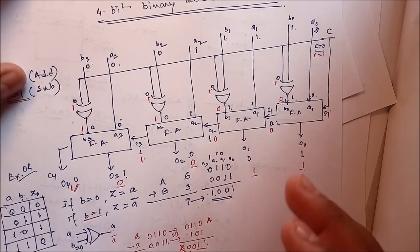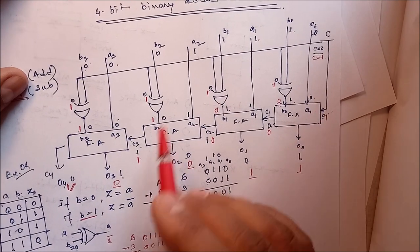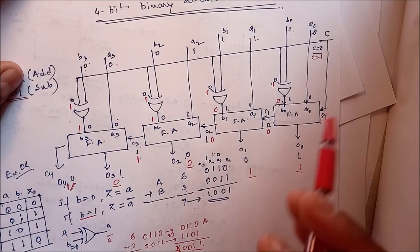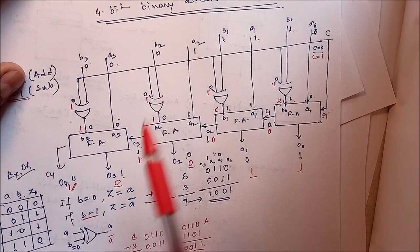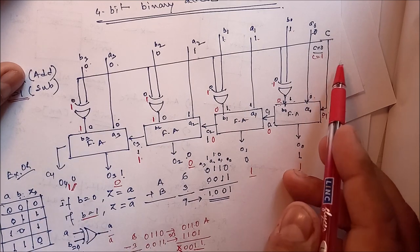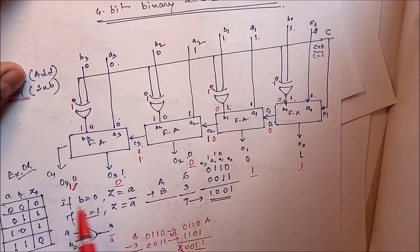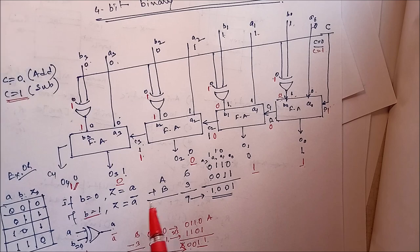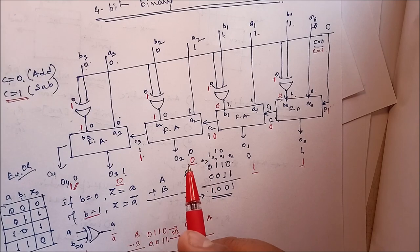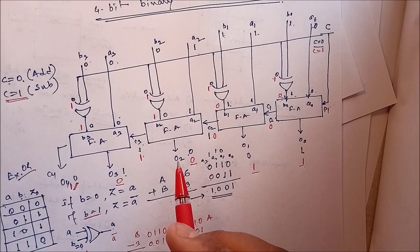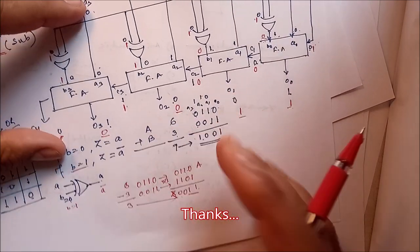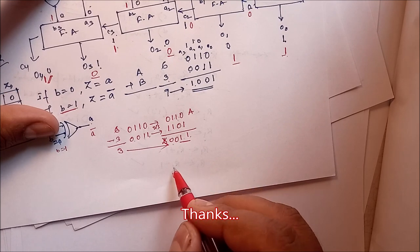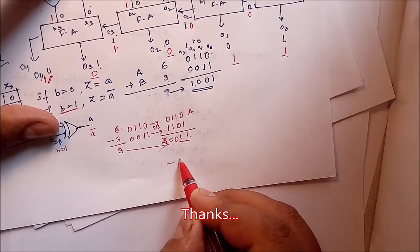So we have seen that if c is equal to 0, it is working as an adder circuit, and if c is equal to 1, it is working as a subtractor circuit. This is the design of the 4-bit binary adder-subtractor. Thank you very much.